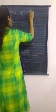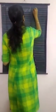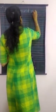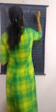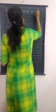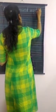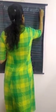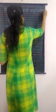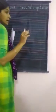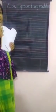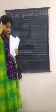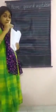Ground Vegetables — V-E-G-E-T-A-B-L-E-S. Above ground vegetables are those which grow above the ground, not under. Okay.